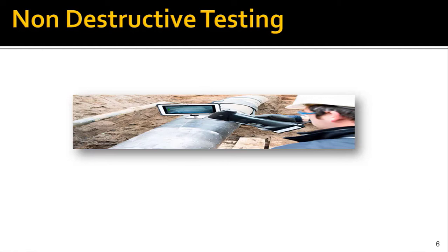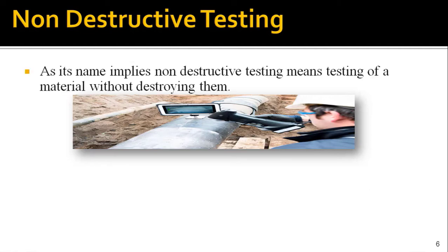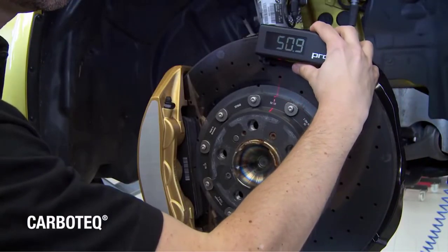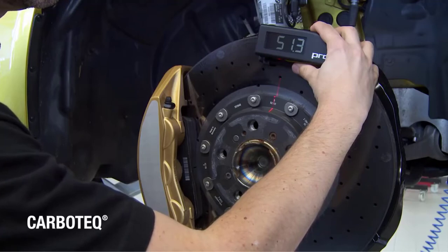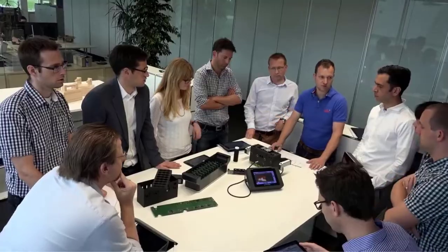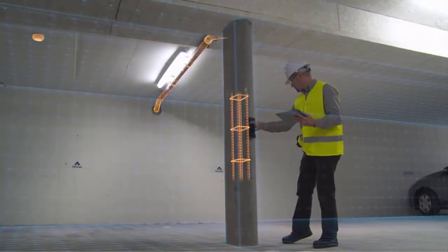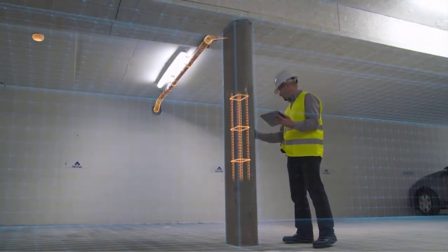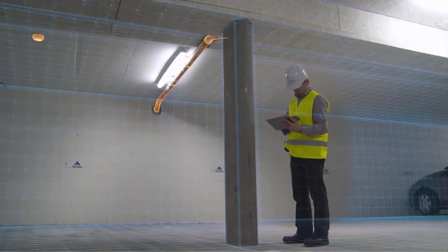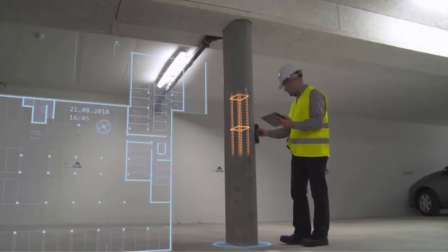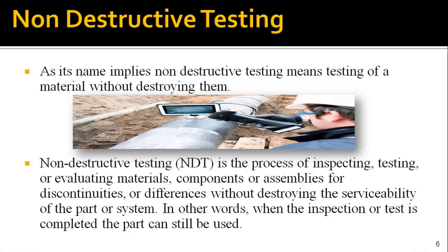Here are a few different definitions for a better understanding of non-destructive testing. The name itself says it all: non-destructive testing means testing a material without destroying it. Non-destructive testing is the process of inspecting, testing, or evaluating materials, components, or assemblies for discontinuities or differences without destroying them. Serviceability will remain the same before and after the inspection, meaning you can use the parts again after inspection.